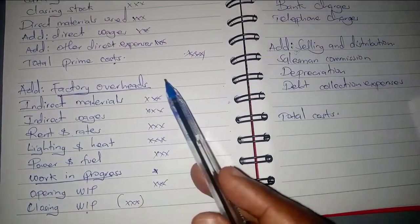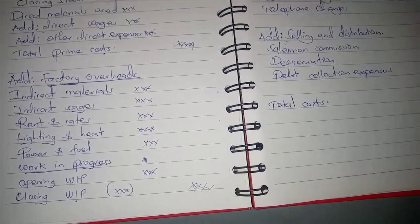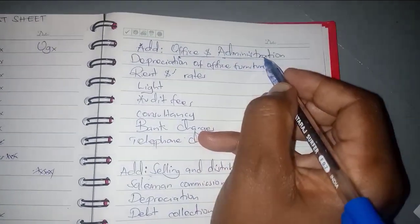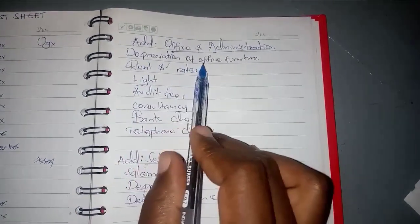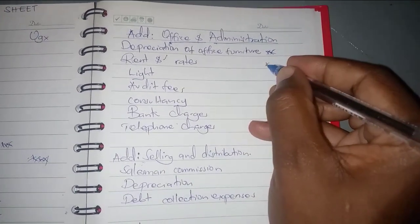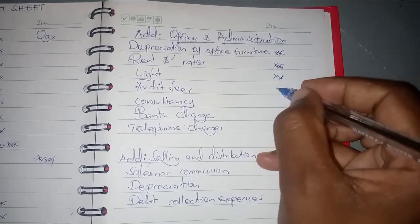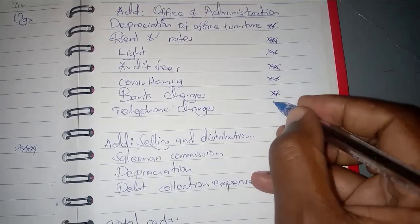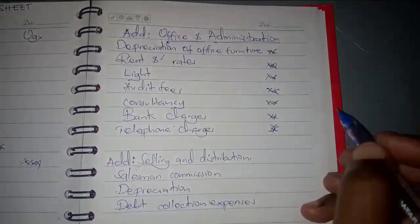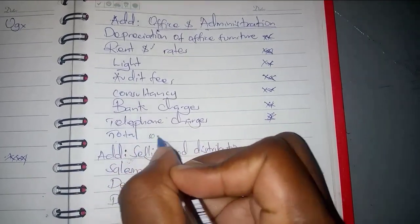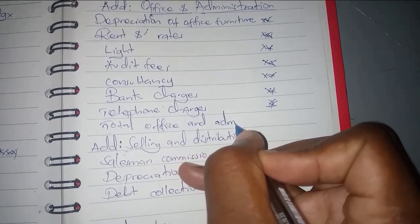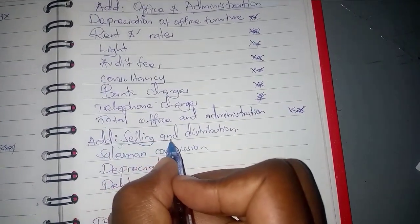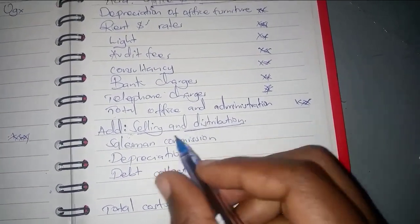After getting the total for factory overheads, we add office and administration expenses. Under this section we have depreciation of office furniture, rent of the office, audit fees, consultancy fees, bank charges, and telephone charges. You then get the total of office and administration expenses and record it in the total column.